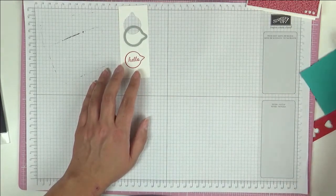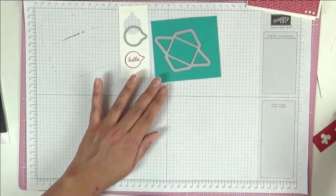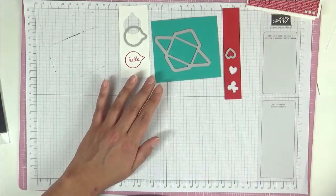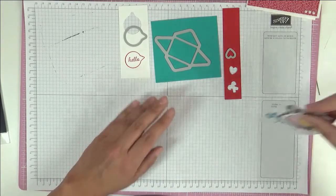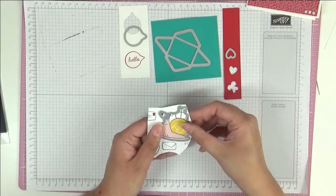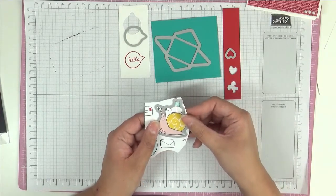Then we have this lovely little envelope die with a piece of Bermuda Bay. We have a piece of real red to cut out that little heart and then we have a snail which is in the designer series paper and this little girl is going to get cut out with that die there.